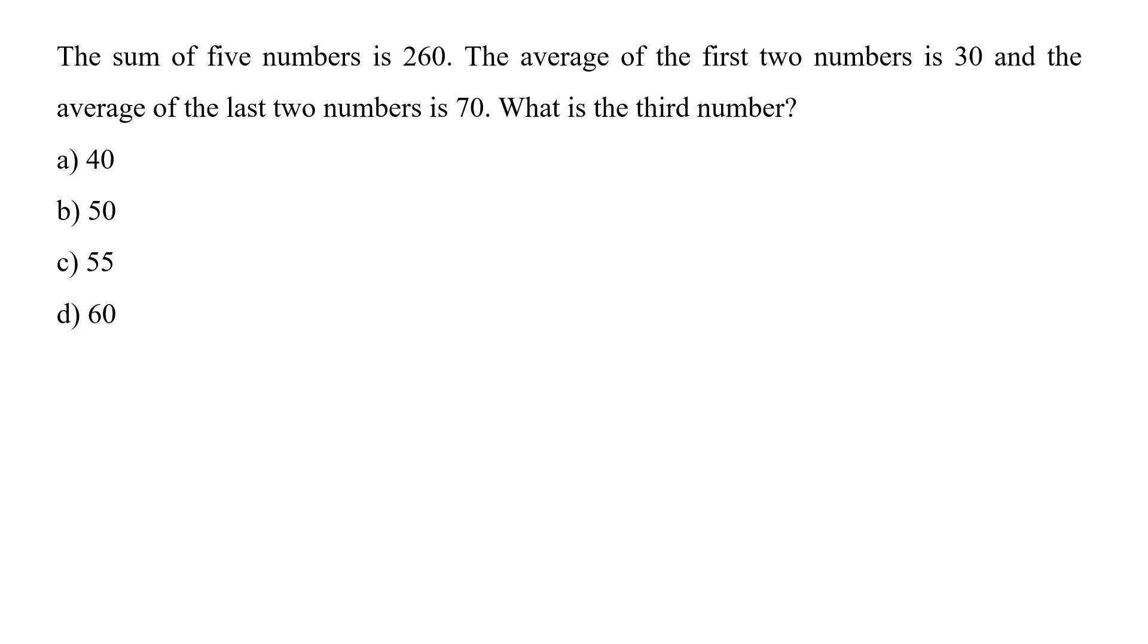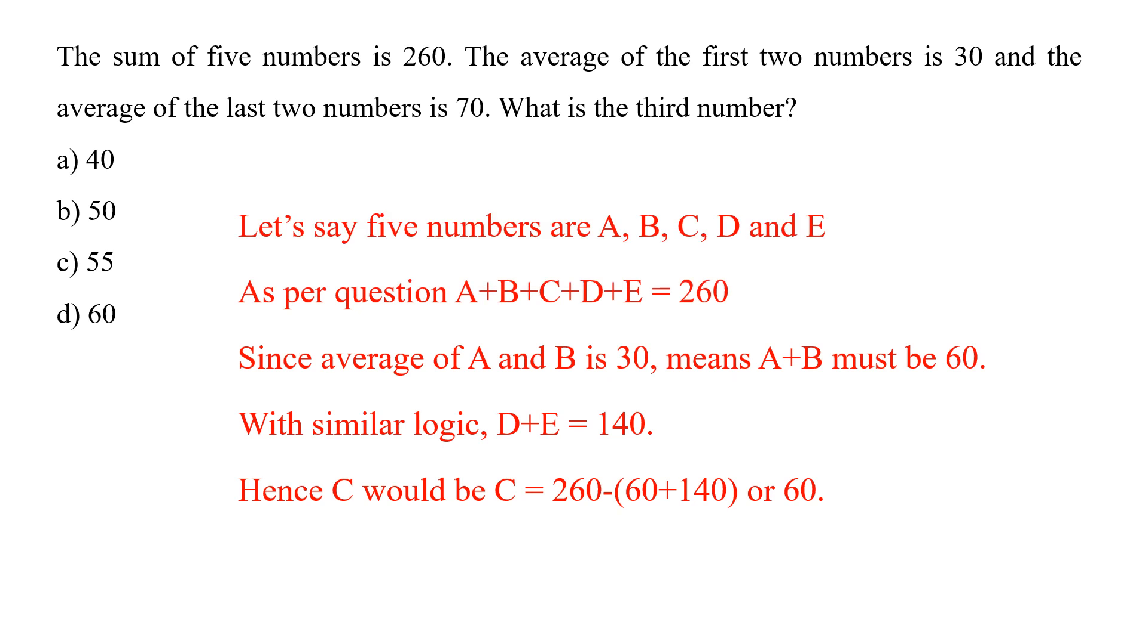The sum of five numbers is 260. The average of first two numbers is 30 and the average of last two numbers is 70. So what is the third number? If we solve this, as we know the average of first two numbers is 30, so we can approximate that the sum would be 60 for first two numbers and the average of last two numbers is 70. So that means we can assume that the last two values will be equal to 140. So now the total would be 140 plus 60 that is around 200. So the rest value, that means the middle one would be close to 60. So option D would be the correct answer.